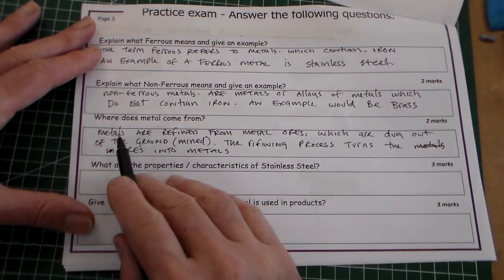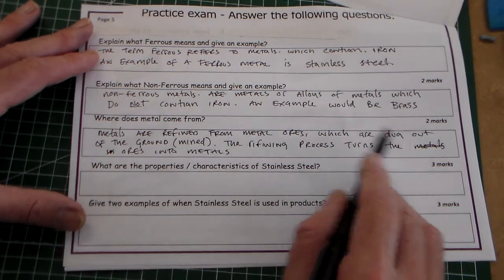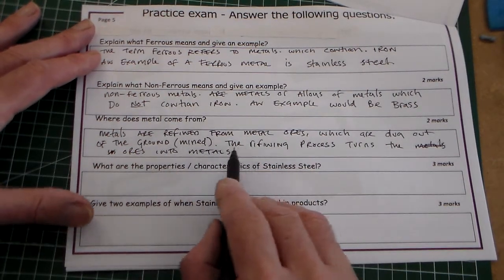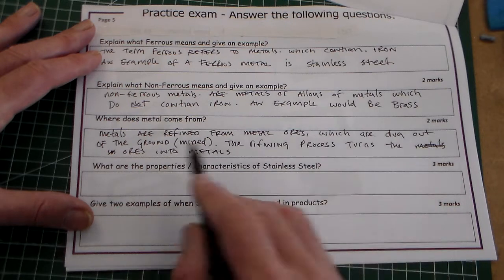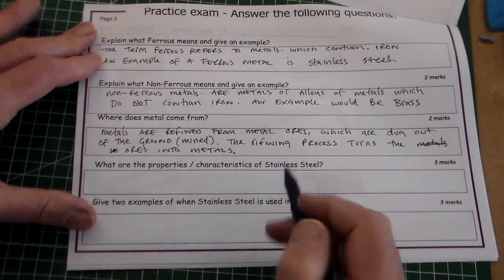So a bit more complex there. The final answer is metals are refined from metal ores which are dug out of the ground, mined. The refining process turns the ores into metals. I think that would get us three marks.